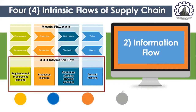Another intrinsic flow of supply chain is information flow. All supply chains have and make use of information flow. Throughout the supply chain, there are a multitude of information flows, such as demand information flow — because you need to know how much demand is coming from customers — as well as forecasting, production and scheduling, and design and NPI information flow. Unlike material flow, information can flow in both directions — towards upstream and downstream alike.